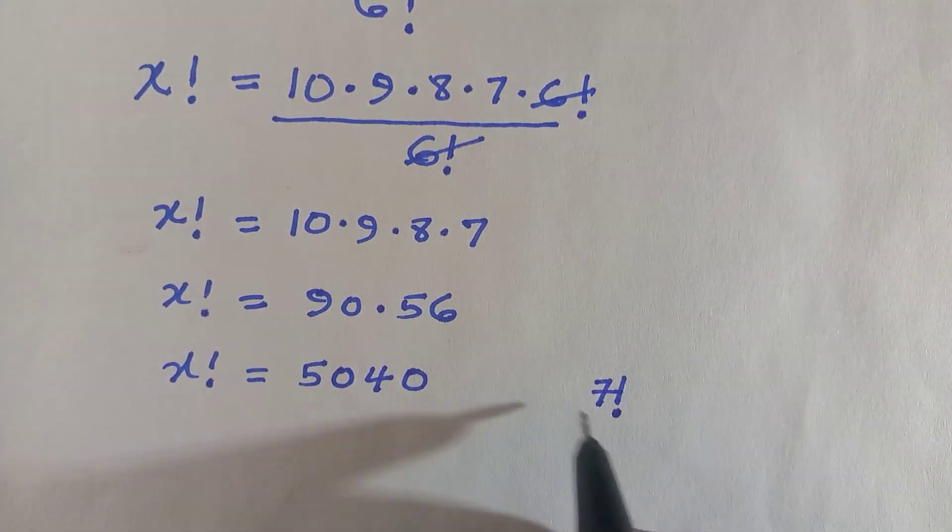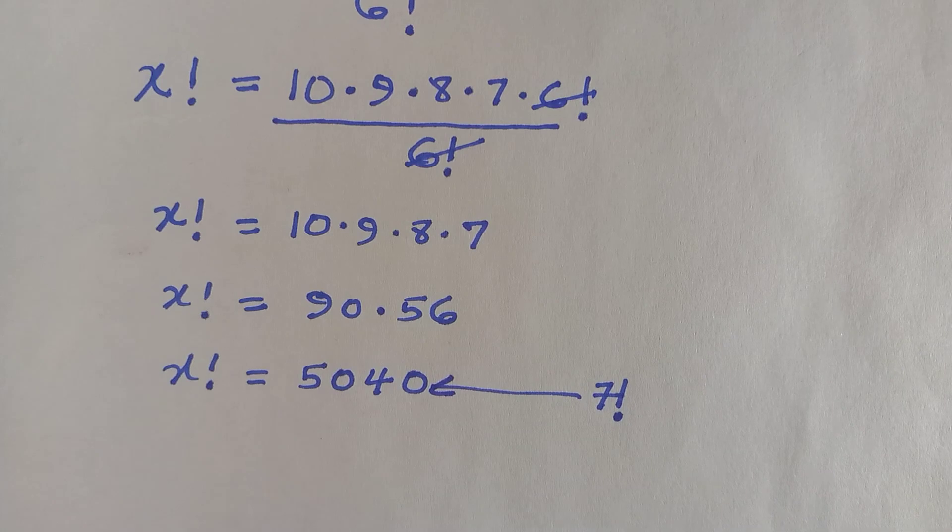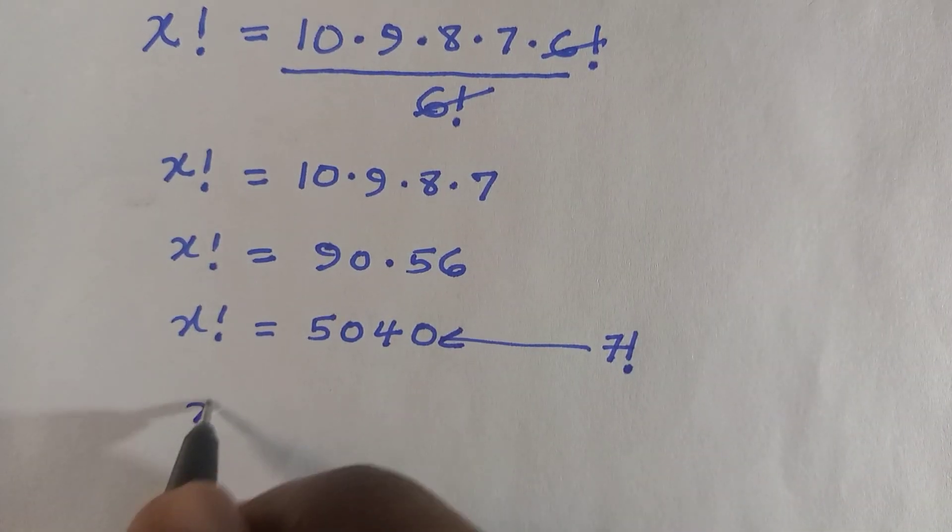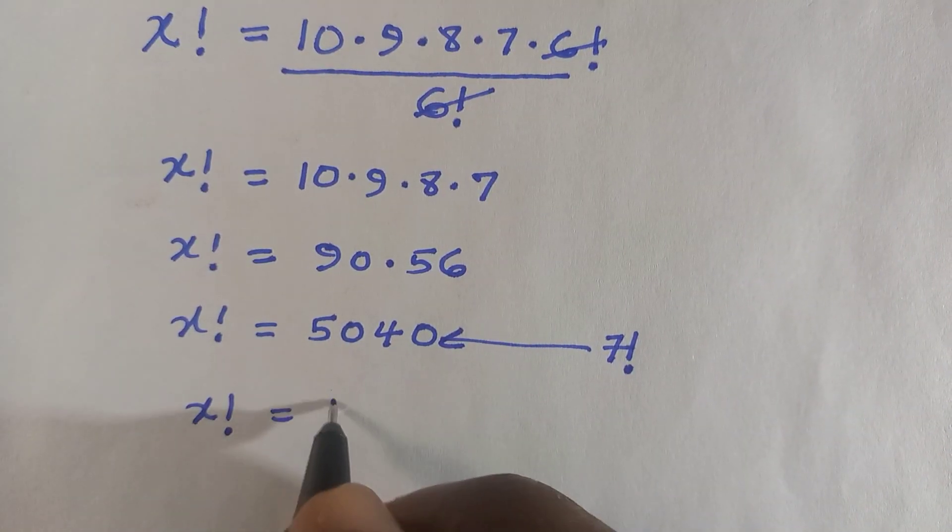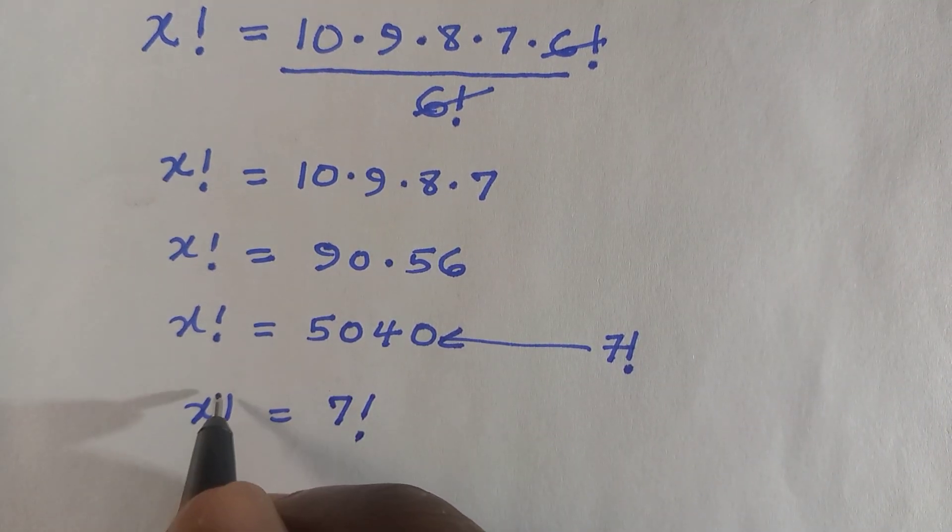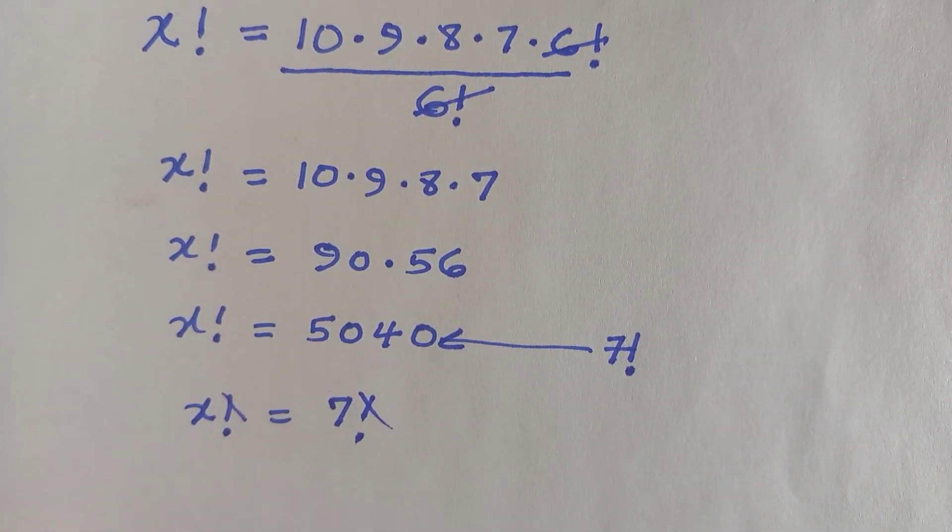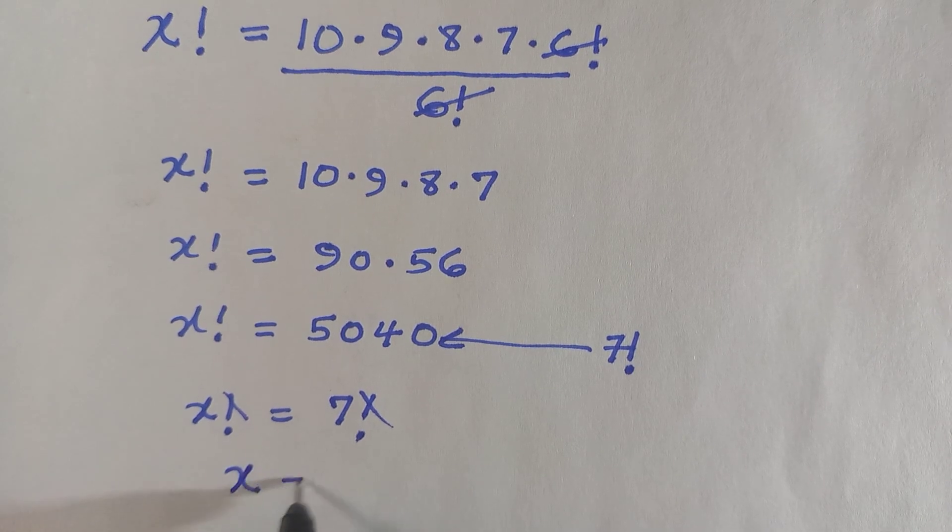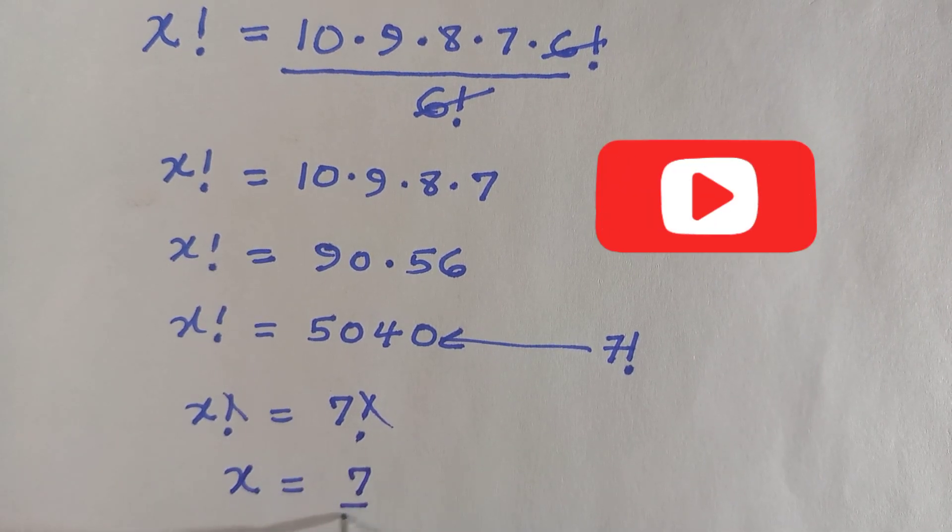By trying this out, 7 factorial equals 5040. We are going to have x factorial equals 7 factorial. Factorial cancels factorial, and the value of x here equals 7.